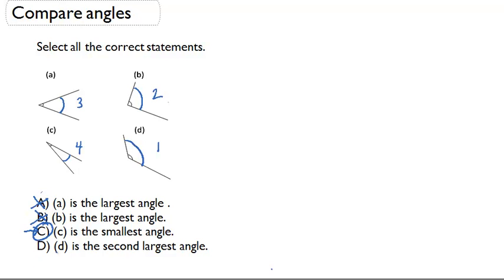And lastly D, D is the second largest angle. If I take a look at D, we put a 1 next to D to show that it was the largest angle. So that statement is also incorrect. So the only correct statement here is C, C is the smallest angle.